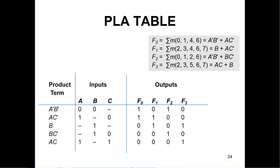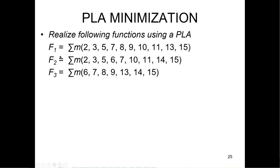Here's the table of product terms, inputs, and outputs. This is how they set up the programmers — sometimes called the personality matrix. You can see how they're reusing some of these terms. The first thing you do is try to simplify these expressions.